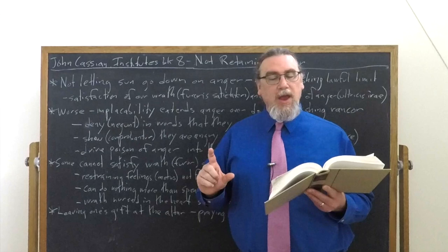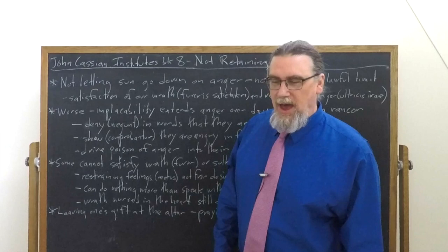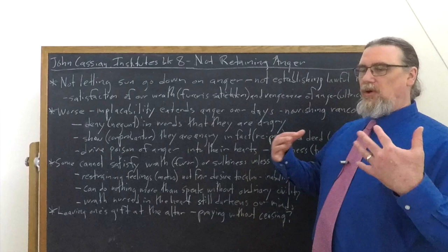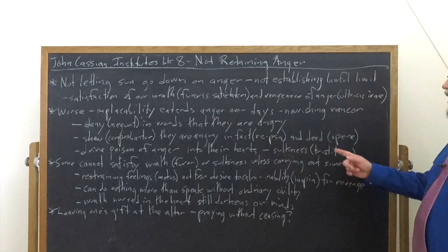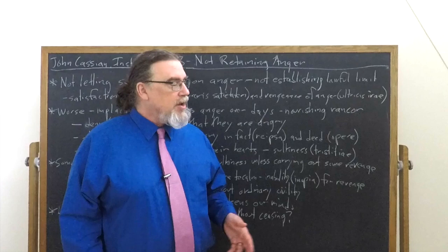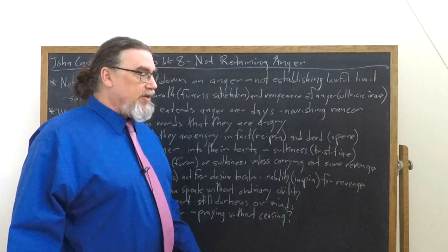And they secretly cherish it and feed on it in themselves without shaking off by an effort of mind, their sulky disposition. And then he says, but digesting it as the days go by, somewhat mitigating it over a while. So there are people who they're not allowed to, or they feel that they can't express their anger openly. So they nourish it within their hearts. And that's not good for them. And that leads to what's being translated here as sulkiness. The more literal translation of this would be sadness or dejection, tristitiae.